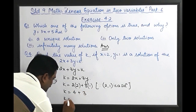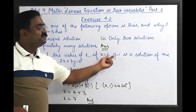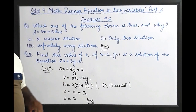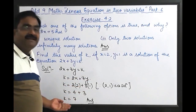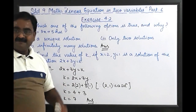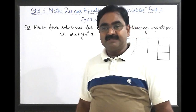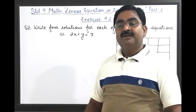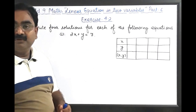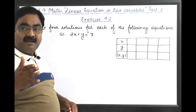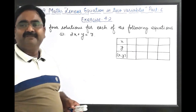Therefore k equals 4 plus 3, which gives k equals 7. That is the answer. If x equals 2 and y equals 1 is a solution of this equation, substituting these values satisfies the equation and we get the value of k easily. Now, let us look at question number two. A few students have doubts in this question and have given queries, so please see this solution carefully.